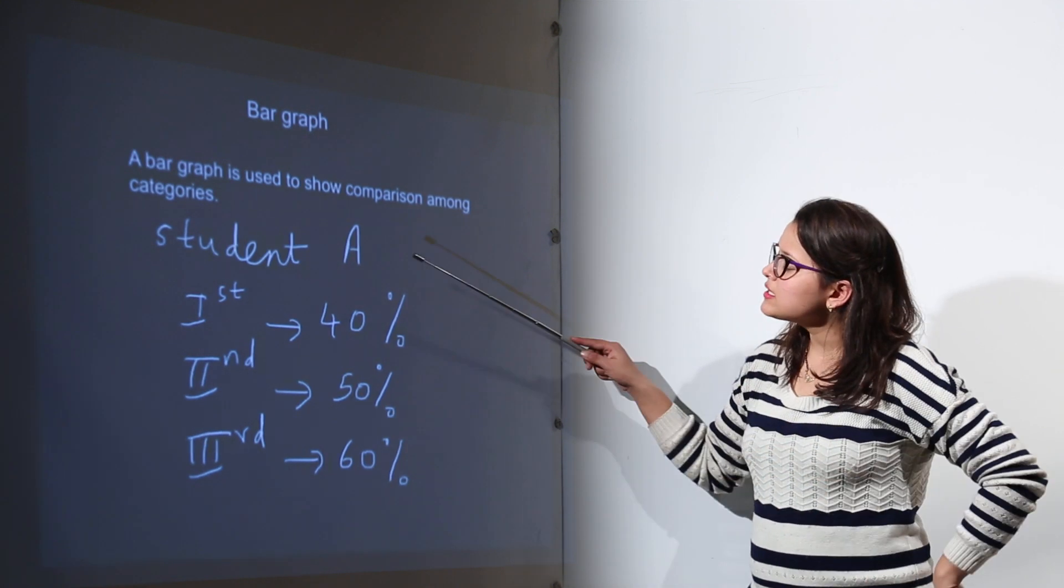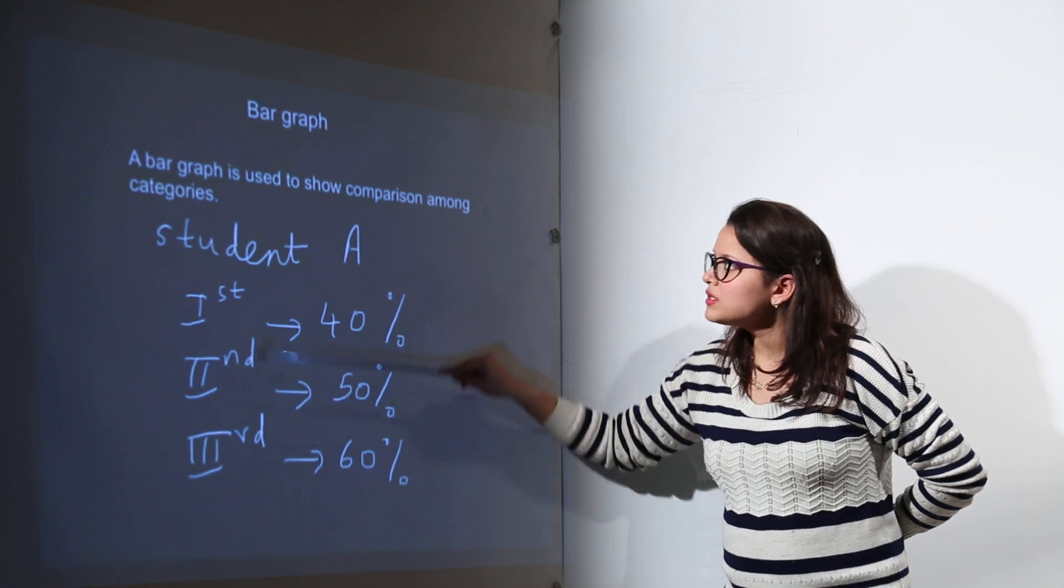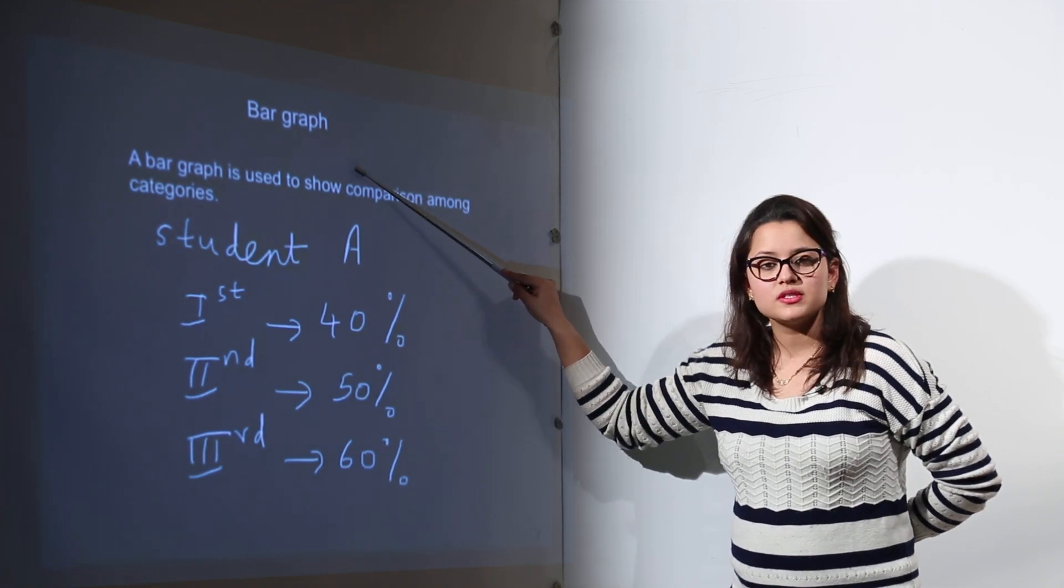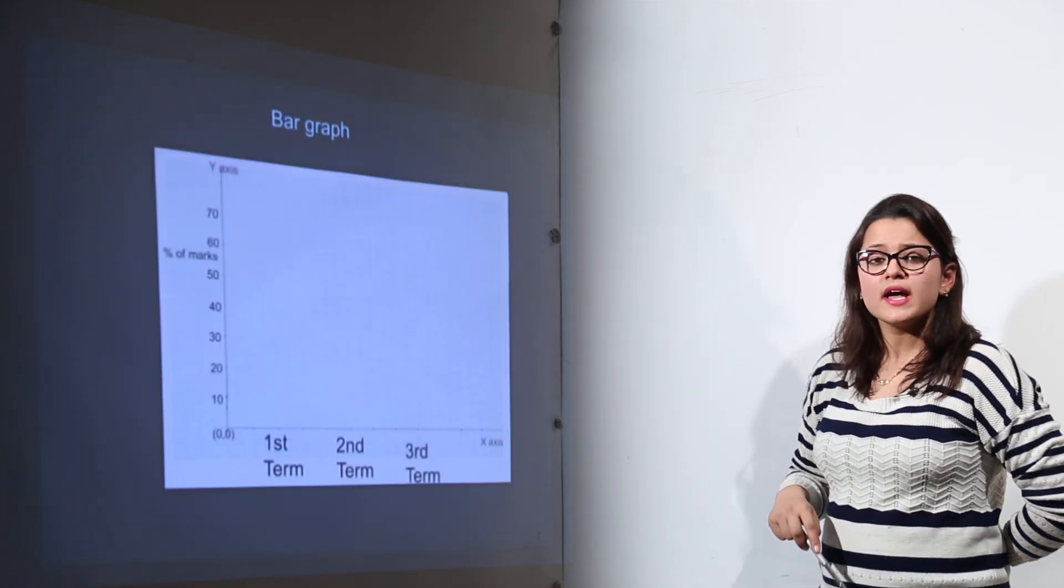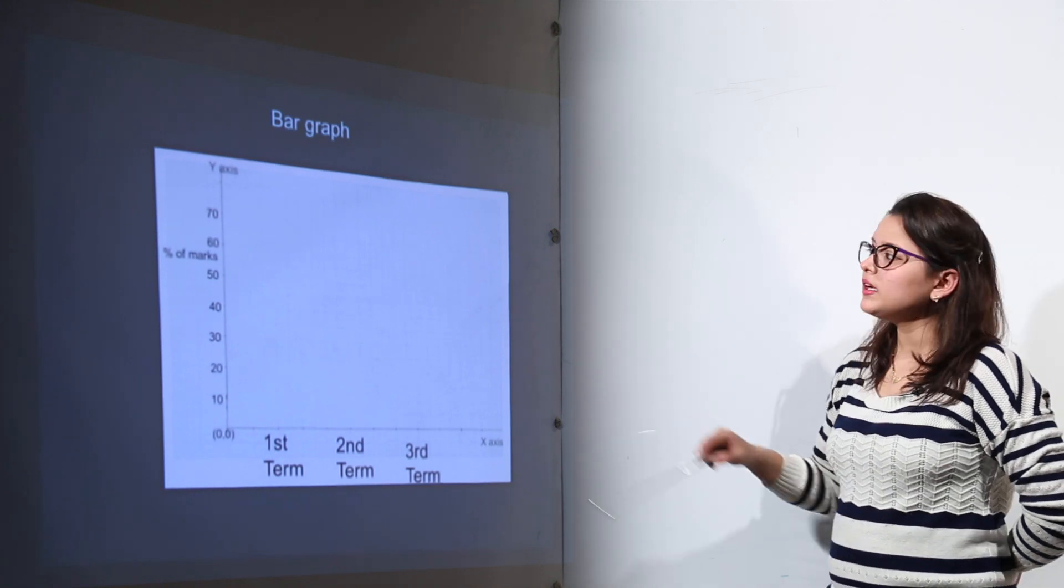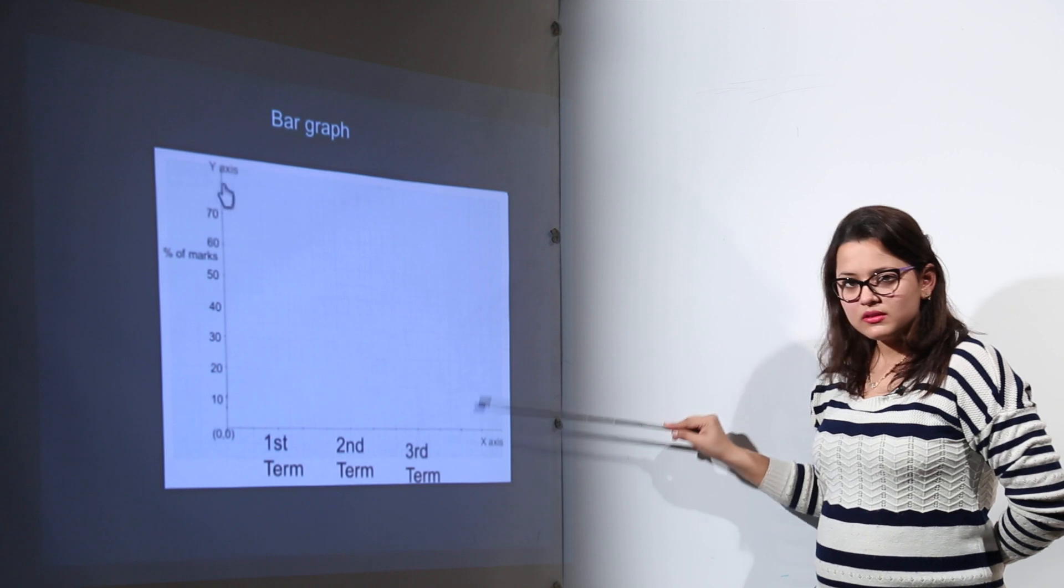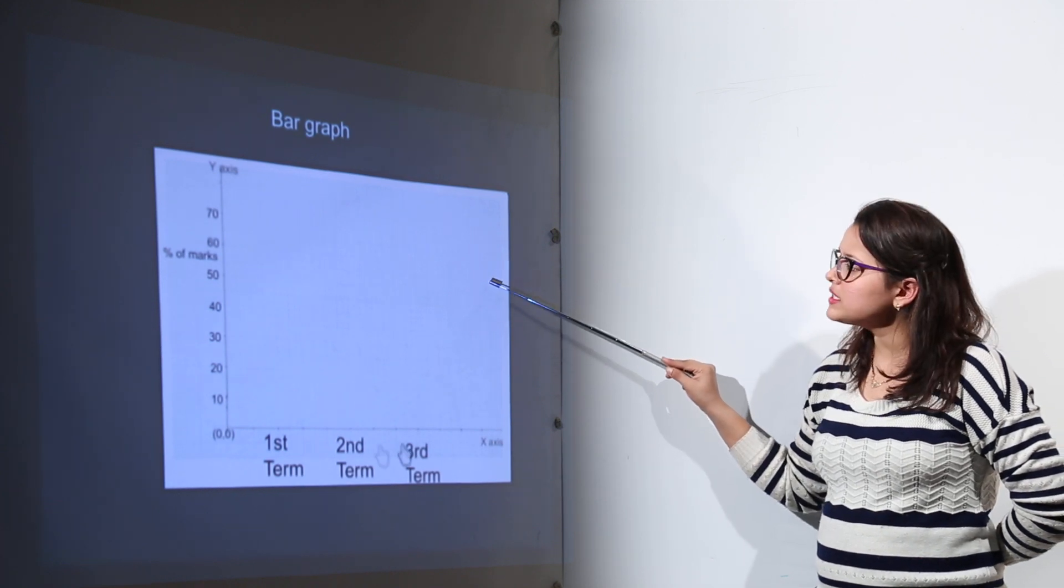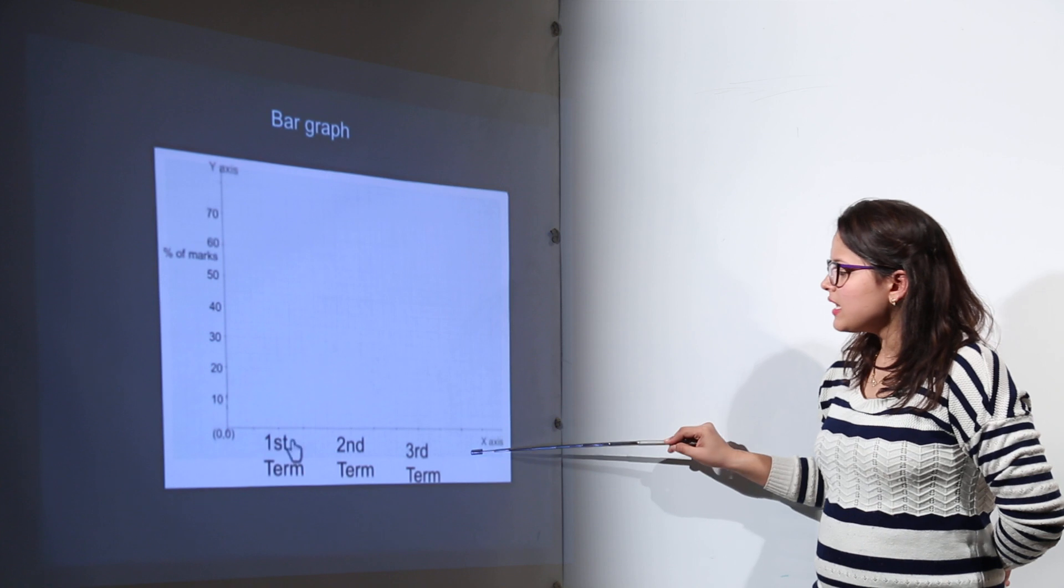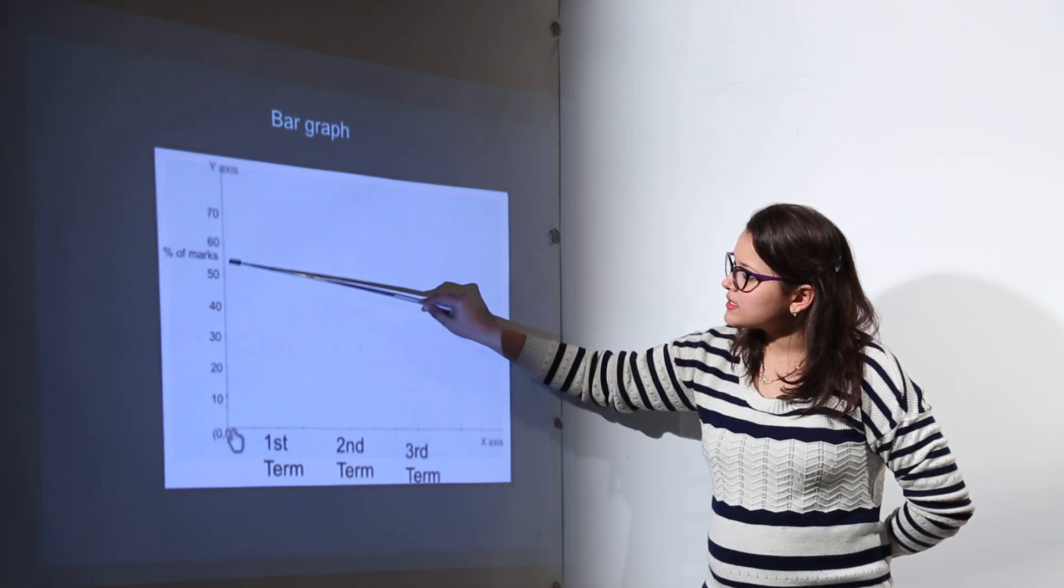Now I am going to compare his marks in all the three terms using bar graph representation. Now as I told you bar graph representation requires you to have a graph sheet. You must have seen the graph sheet like this. It has one x-axis and one y-axis.